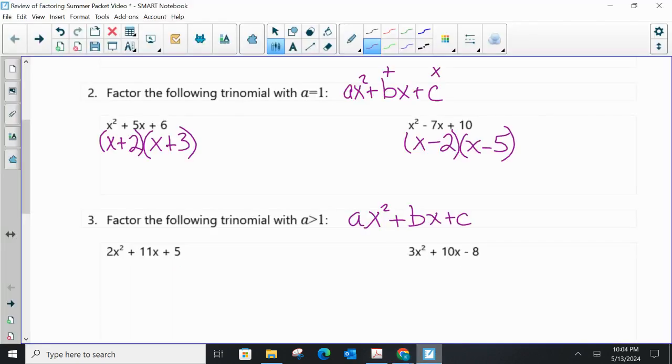So as you can see, that one factored as (x - 2)(x - 5). Next we have factoring another trinomial in the form ax² + bx + c, but this one has an a value greater than 1. So again, what we should do every time we approach a problem is say, oh is there a GCF? And in this problem 2x² + 11x + 5, there is not a GCF.